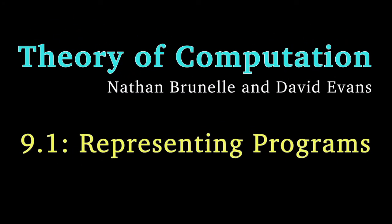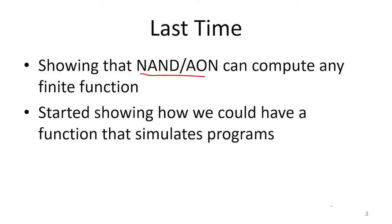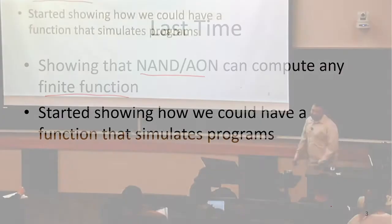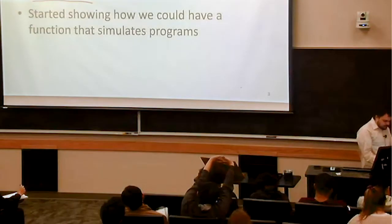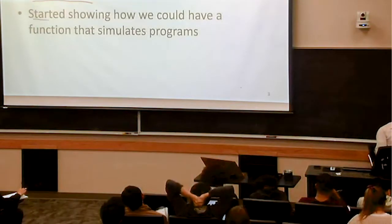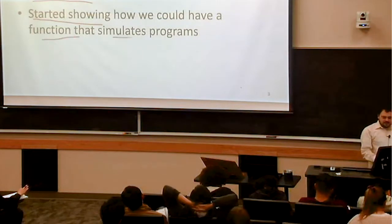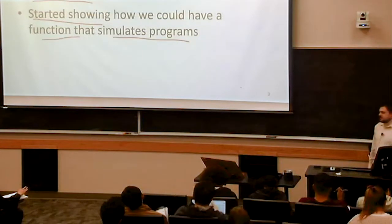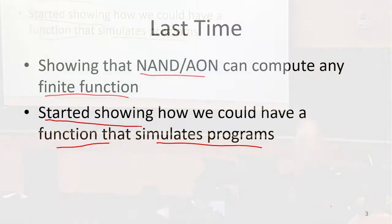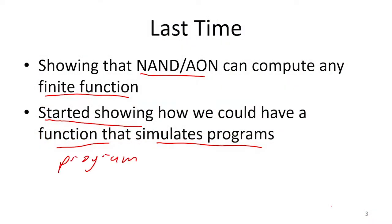Last time, basically what we did is we started out by showing that we can use NAND or AND-OR-NOT to compute any finite function at all. We can do it with NAND or AND-OR-NOT gates. And we started this discussion of showing how we could have some function that basically simulates programs, so that we could write a function where the input is going to be like a program and an input for that program, and our output is going to be what would happen if we ran that program on that input.